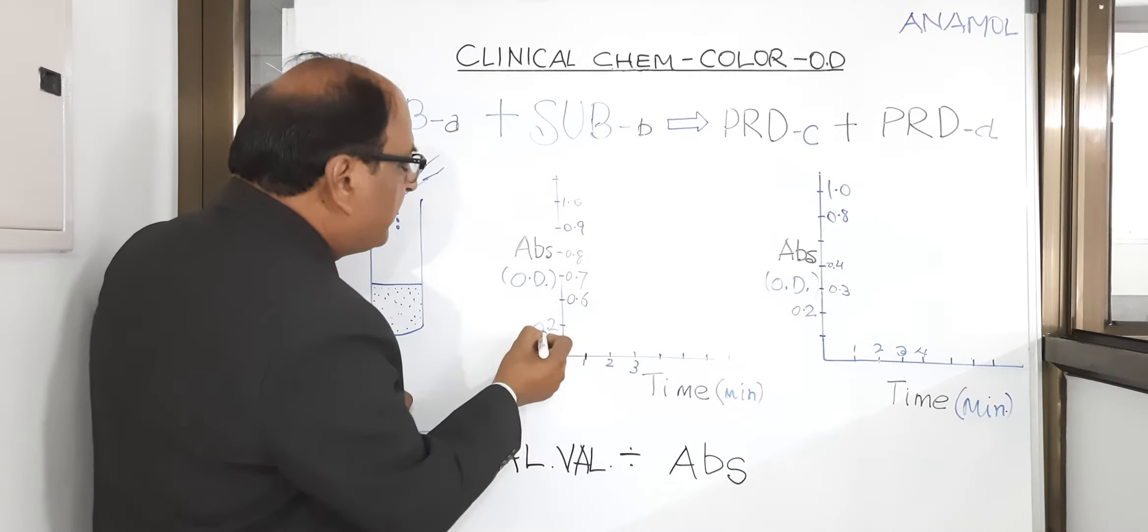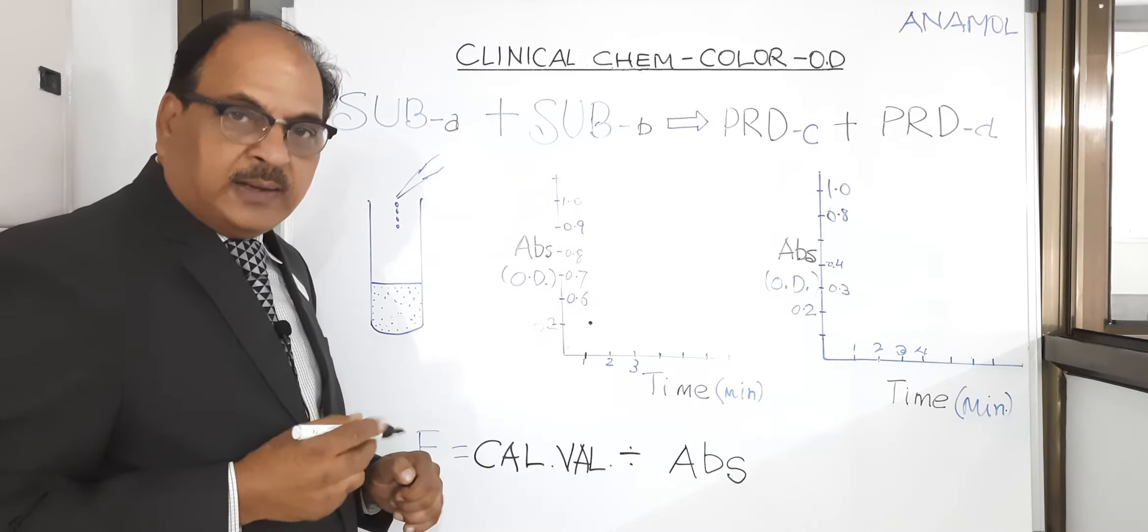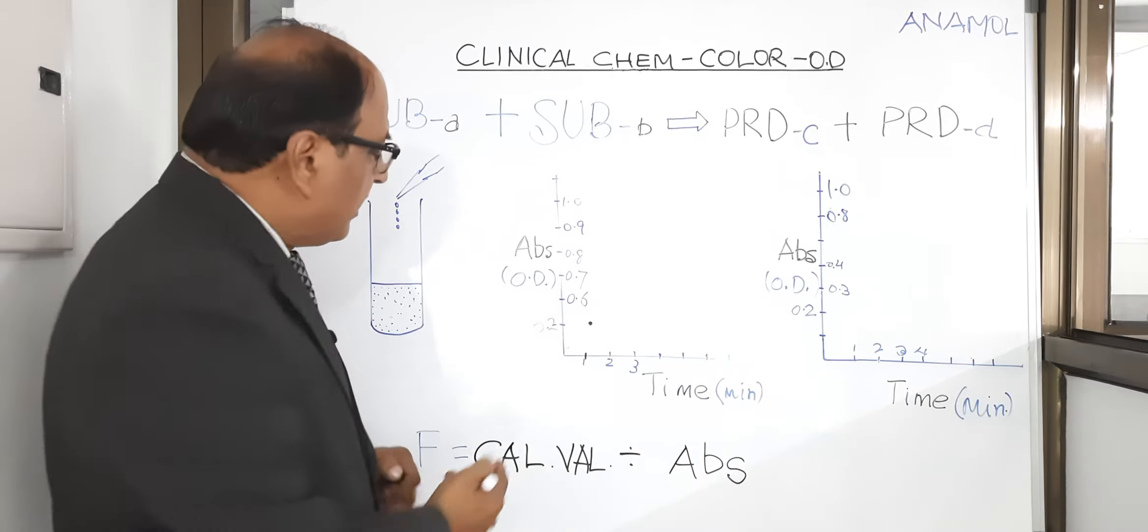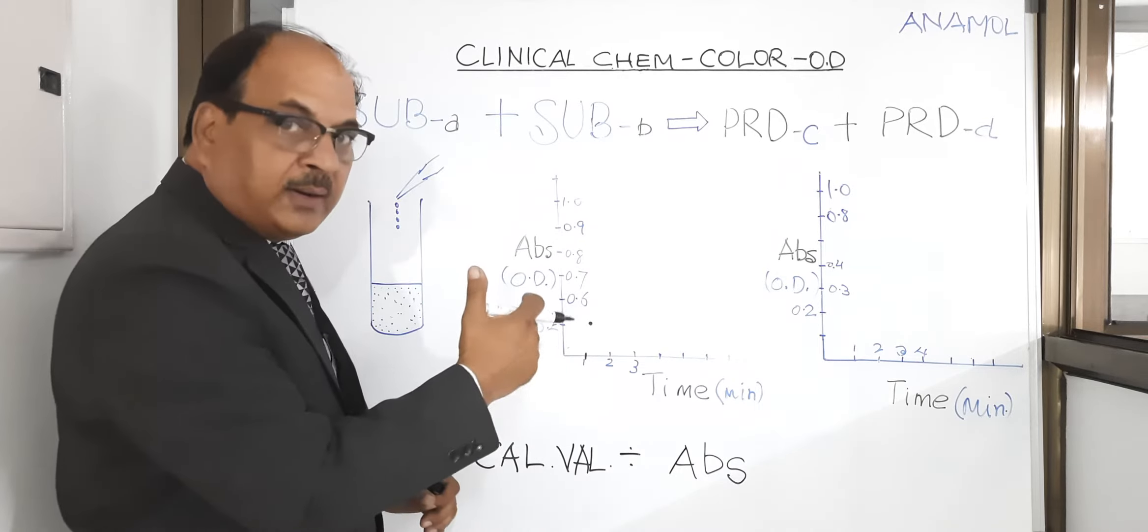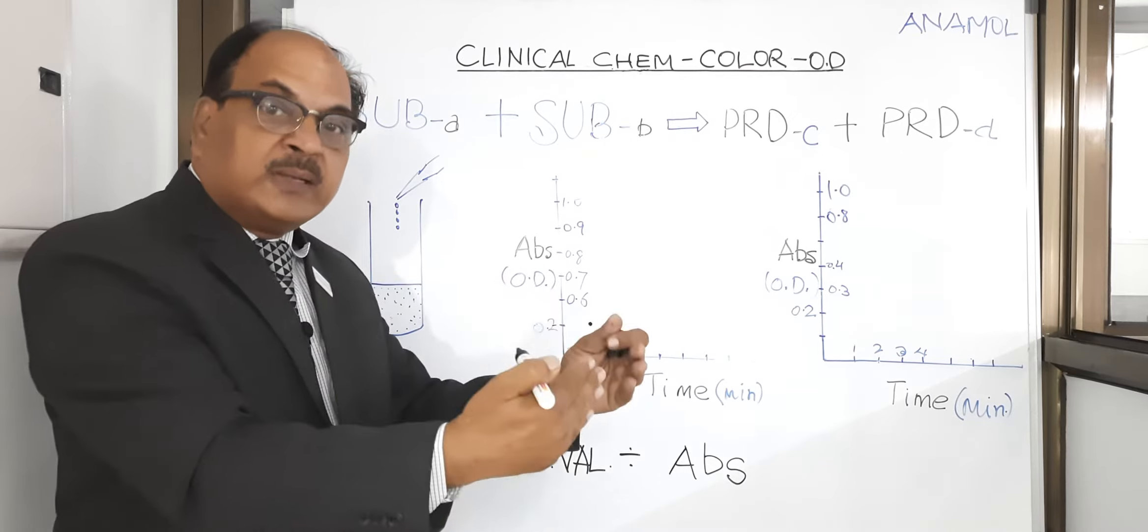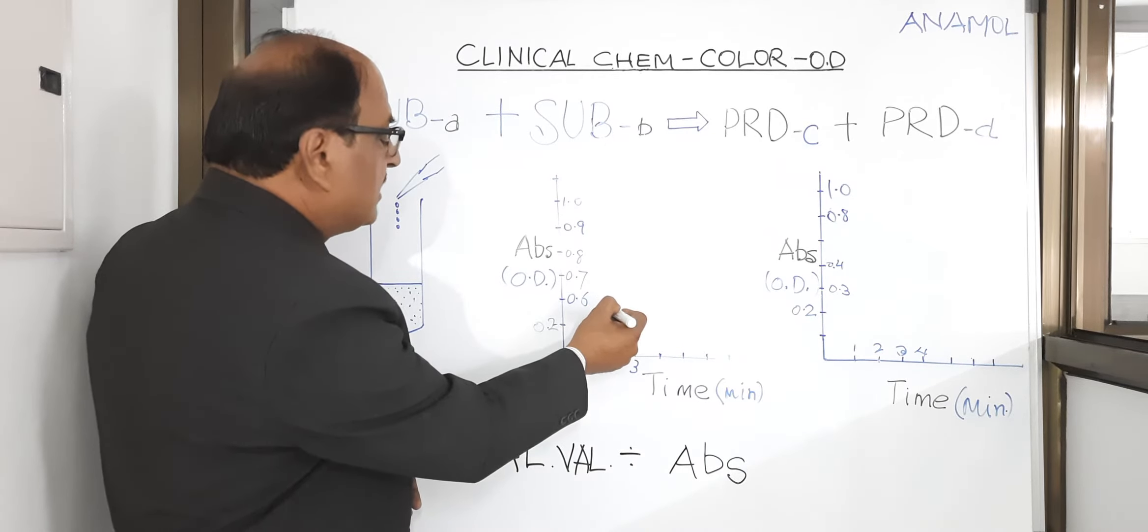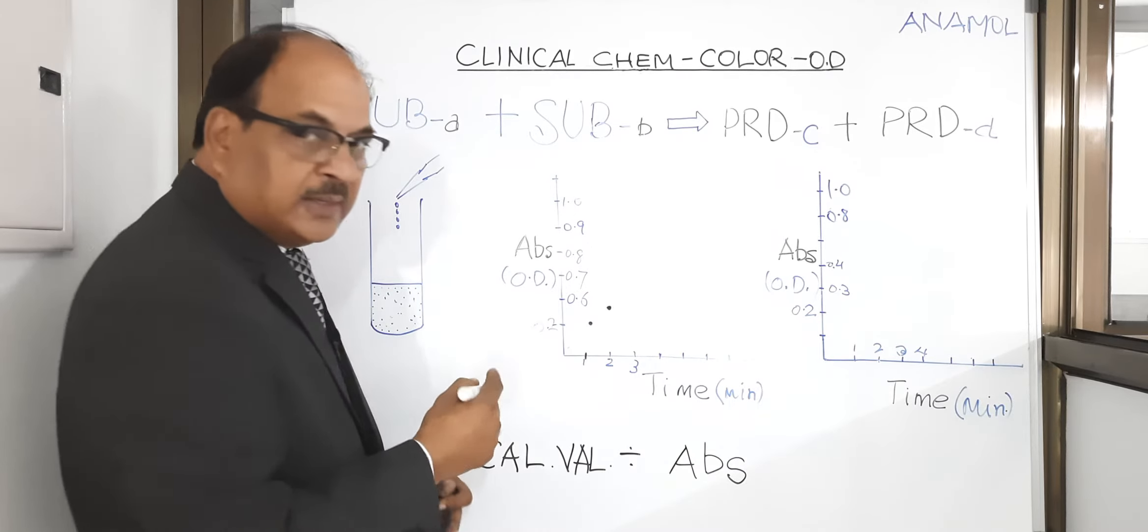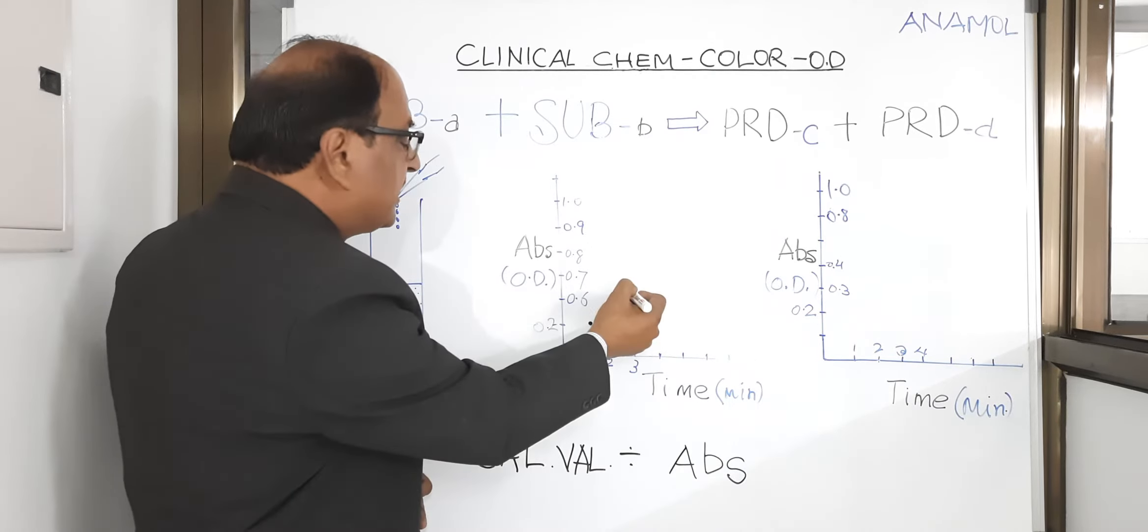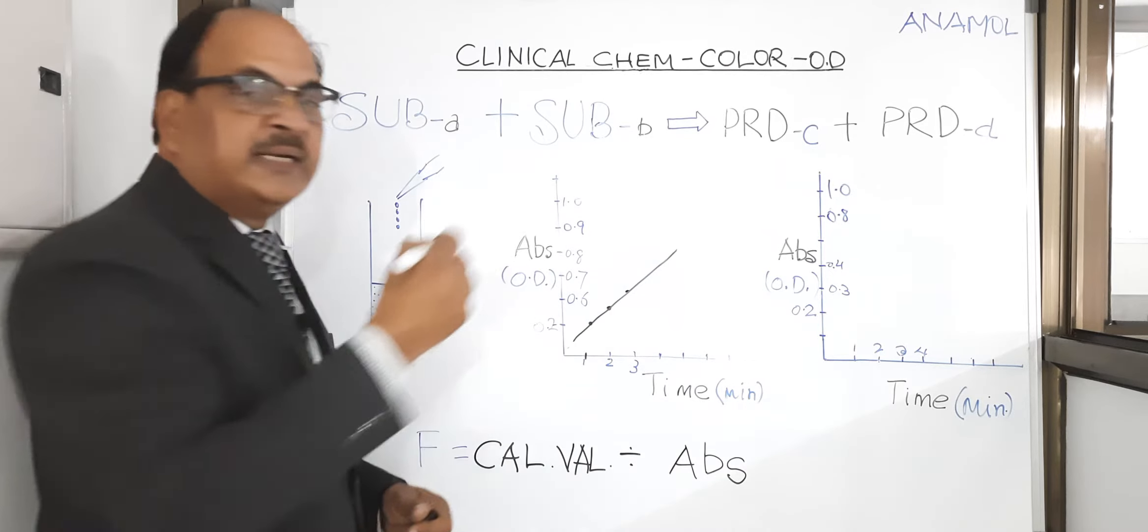In the beginning at minute number one, when instrument is trying to see the optical density, it may be around 0.2. Second minute, the yellow color has increased, hence the instrument shows more absorbance in the solution, so minute number two absorbance is 0.3. Third minute absorbance is even more.